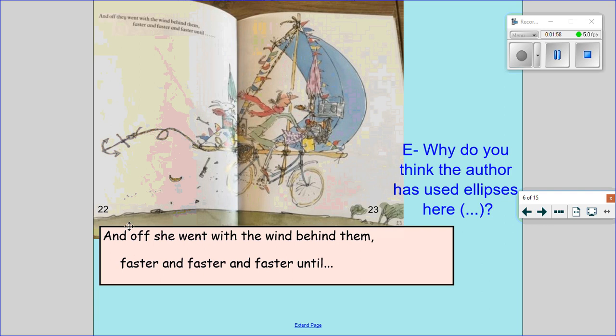Question 22. And off she went with the wind behind them faster and faster and faster until... Why do you think the author is using ellipsis here, the dot dot dot? I think it's going to happen.